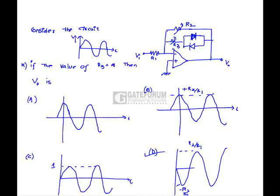If Vi is less than 0, V0 is going to be positive. Still, one of the diodes will conduct, so it is clipped off to 0.7 volts again. Hence option A is correct.